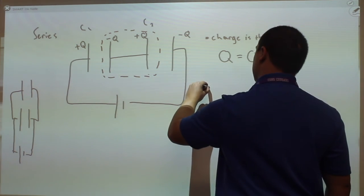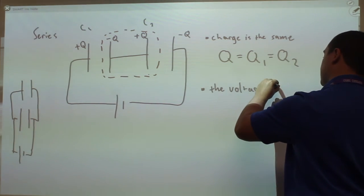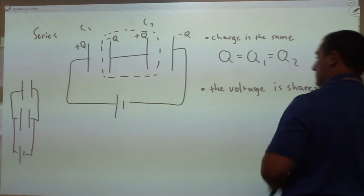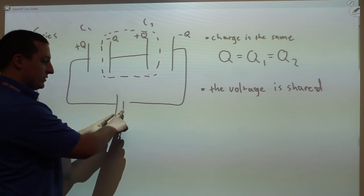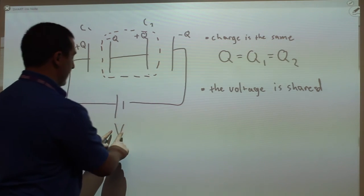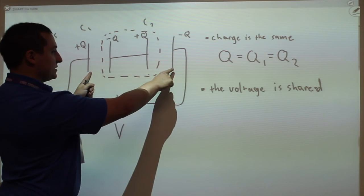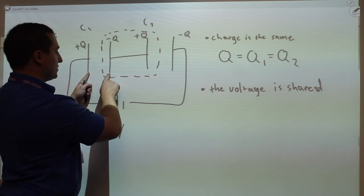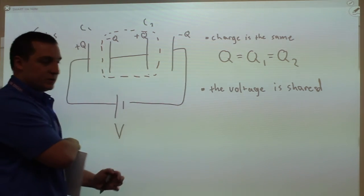But the voltage is shared. I only have a particular potential difference across this battery that has to be shared in between both of these capacitors. If I put a potential difference here, the total potential difference has to cross these two conductors. And so the potential difference across 1 and the potential difference across 2 have to add to the total potential difference.